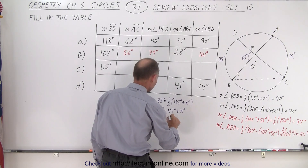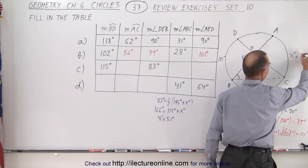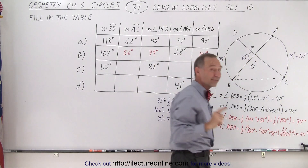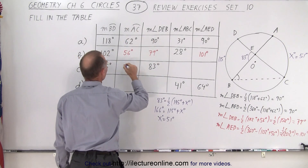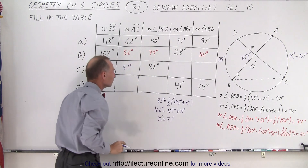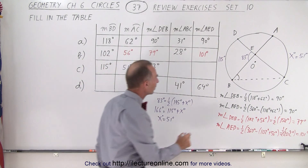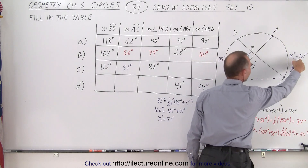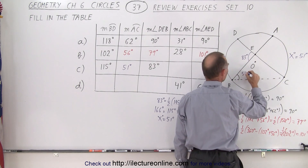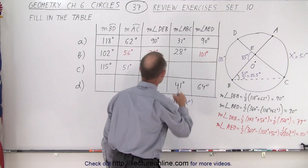So x equals 51 degrees — that goes in for the measure from A to C. How about the measure from A to B to C? That angle has to be half this arc length, so that would be 51 degrees divided by 2, which is equal to 25.5 degrees, and that goes in here.